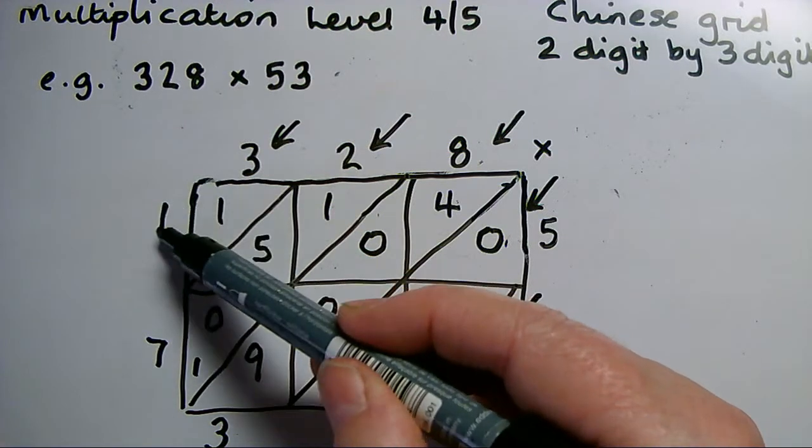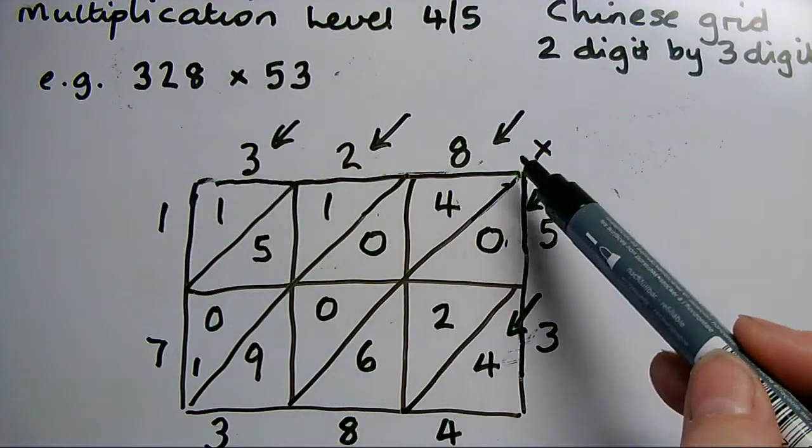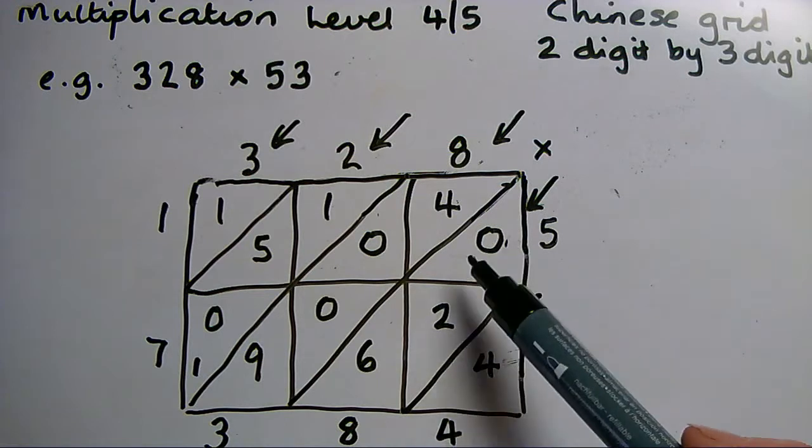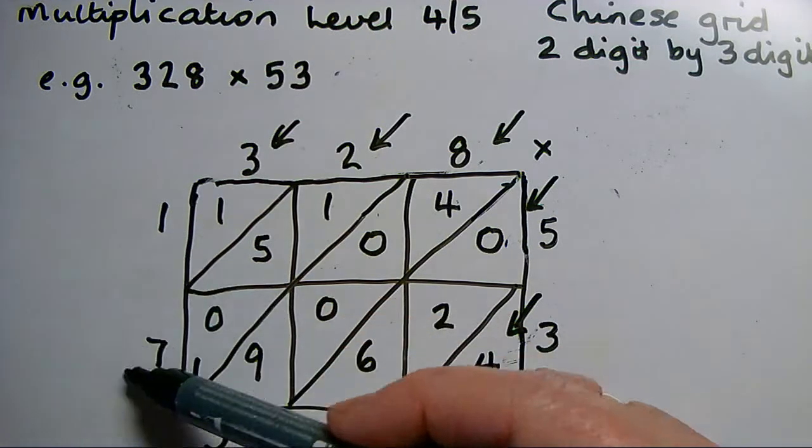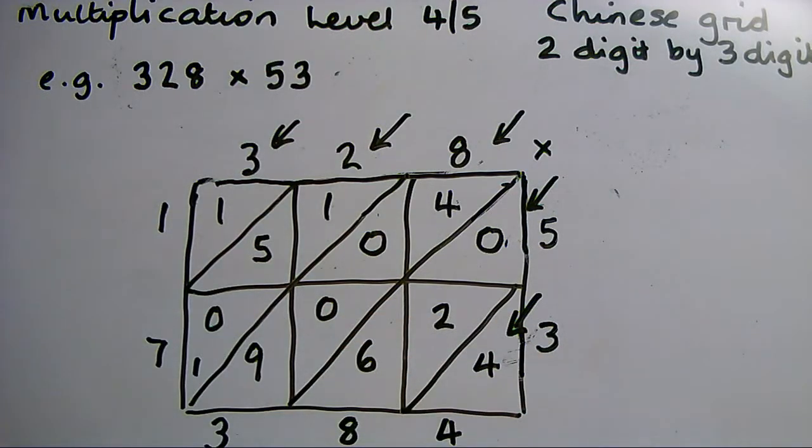I don't add the digits around the outside. I'm just adding the digits down the diagonals in those columns. I then read my number round from this end across the bottom, and I can see that my answer is actually 17,384.